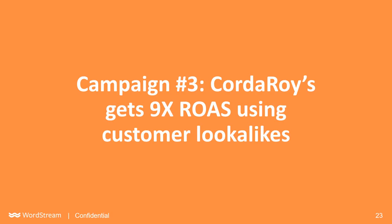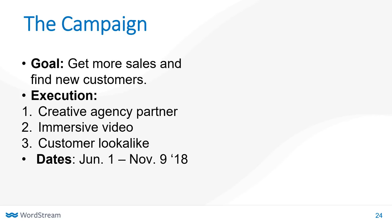The brand we're going to talk about for our next Facebook campaign is Corduroy's. Their flagship product is basically a beanbag bed that turns into a chair — a super cool product. The goal of the campaign was to flat out drive more sales and reach a wider customer base. The first thing they did was realize they didn't have the resources in-house to create the video they knew they needed. So they went out of house and partnered with a creative agency called Mute6, who was able to create an extremely cool video for Corduroy's that shows prospects exactly how the product works.